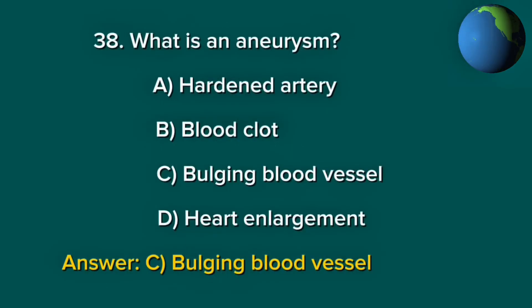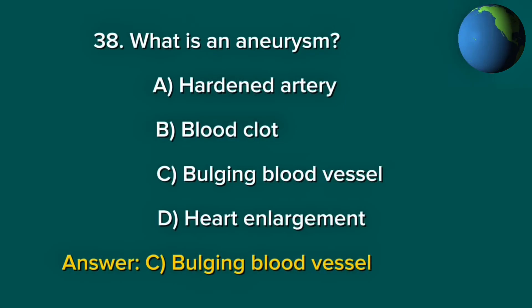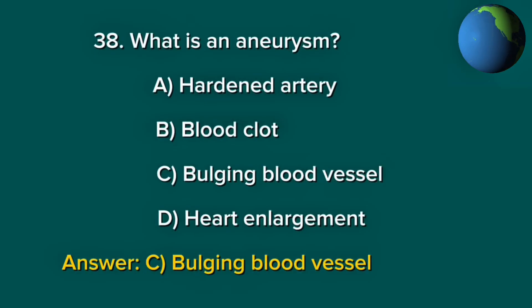Question 38. What is an aneurysm? A. Hardened artery. B. Blood clot. C. Bulging blood vessel. D. Heart enlargement. Answer: C. Bulging blood vessel.